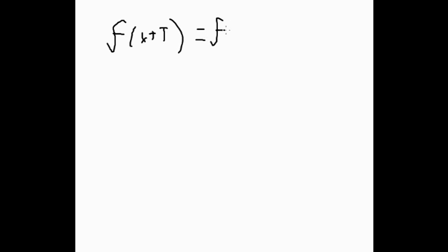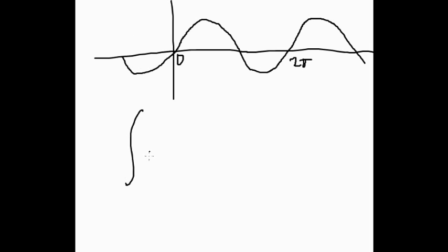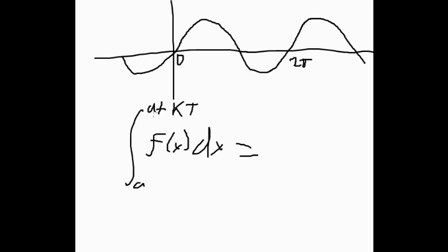Some other examples involve periodic functions, where f(x + T) = f(x) for any value of x. The integral from 0 to 2π is exactly the same as from 2π to 4π. So if we have an integral of a periodic function from some number a to a plus kT, this equals k times the integral from a to a plus T of f(x) dx.